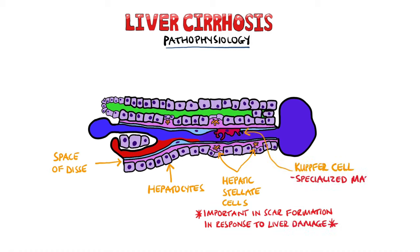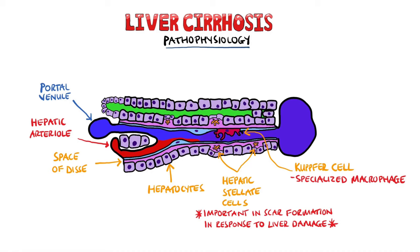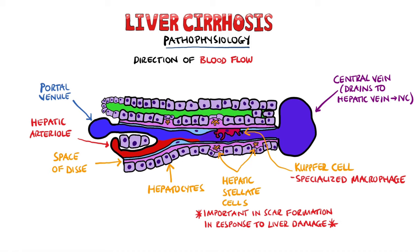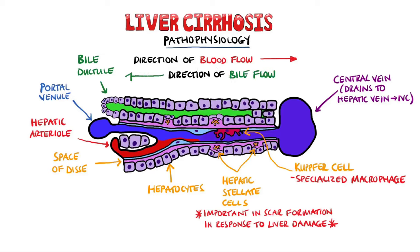Kupffer cells are a type of specialized macrophage that have phagocytic and scavenger activity, and these are found in the sinusoid. Venous blood from the portal system mixes with arterial blood from the hepatic artery in the sinusoid, and then flows through into a central vein. These central veins collect together in the hepatic veins, which take blood into the inferior vena cava. The green you see on the top is bile produced by hepatocytes, flowing into the biliary system.